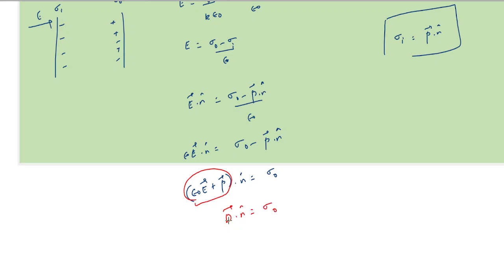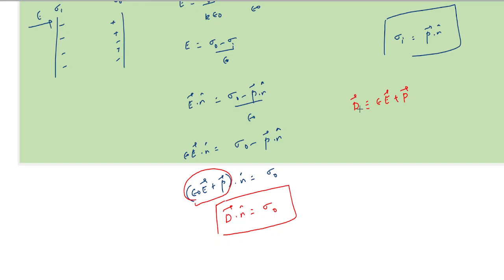This is the expression for the displacement vector D. We want D because the role of D in a dielectric is the same as the role of the electric field E in vacuum or free space. Whatever the electric field does in free space, the same role is done by the displacement vector in a dielectric medium.